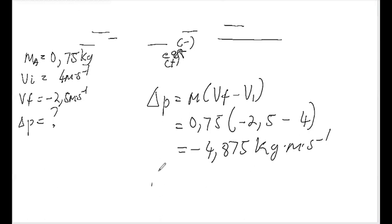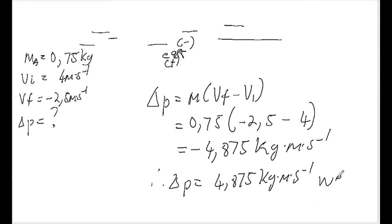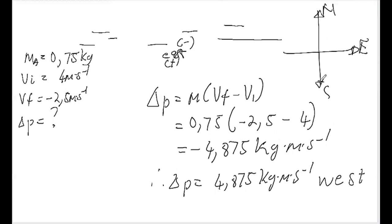Because the answer is negative, we conclude that the change in p is 4.875 kg·m/s towards the west. Remember we use cardinal points — North, East, South, West — to indicate direction. Most of the time the direction is given in the problem; if not, you need to determine it yourself.